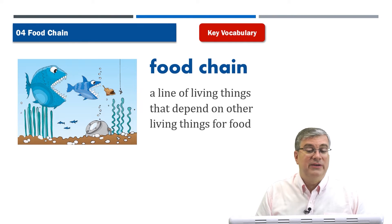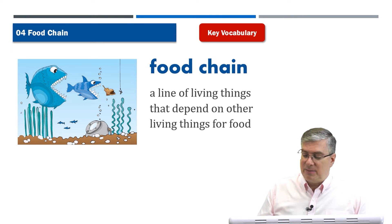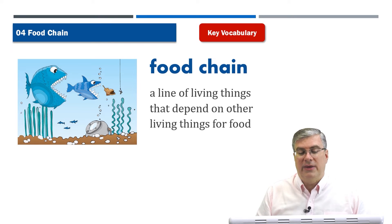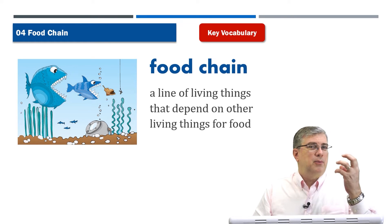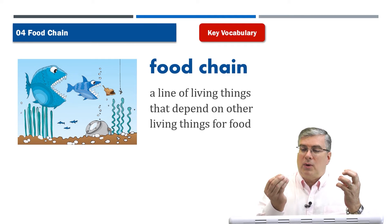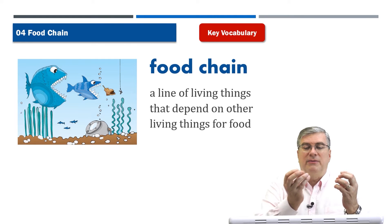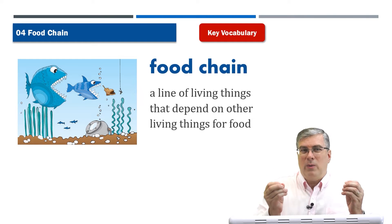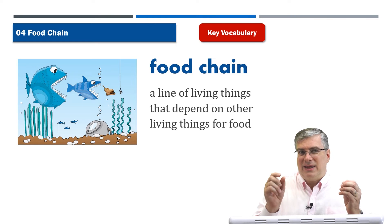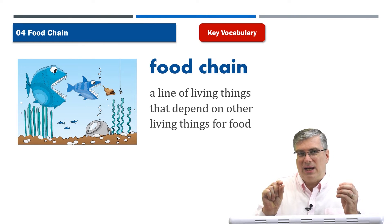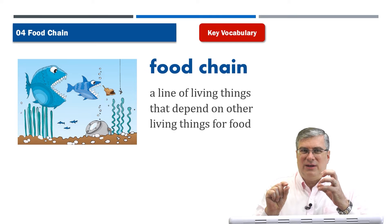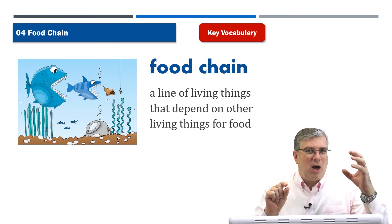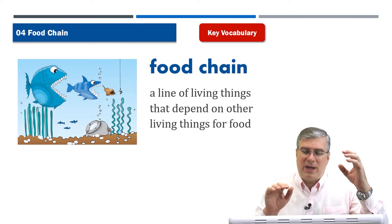Food chain. A food chain is a line of living things that depend on other living things for food. There are many types of prey and many types of predators. Usually the smaller or weaker animal is lower on the food chain, while the stronger, faster, and bigger animal is higher up the food chain.